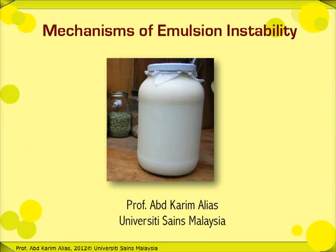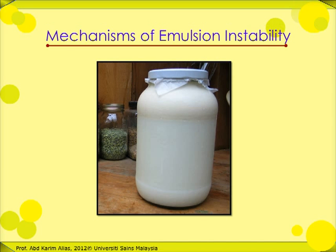Hello everybody. In this presentation, let's look at some mechanisms that can cause an emulsion to become unstable — that is, to separate into two layers. As you can see in this picture, the milk, which is a simple emulsion, has separated into two layers.